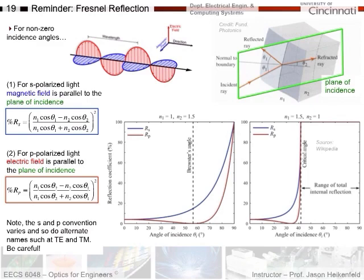When you have reflection or refraction at an interface — in this case we're going to focus on Fresnel reflection — the plane of incidence is the plane in which the angles are measured. If my light comes in like this, and I look at the flat plane that they form, that's the plane of incidence.